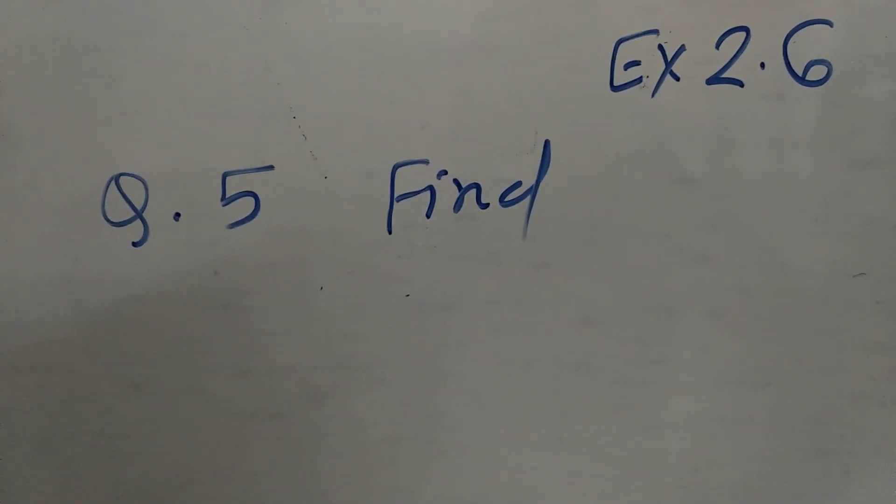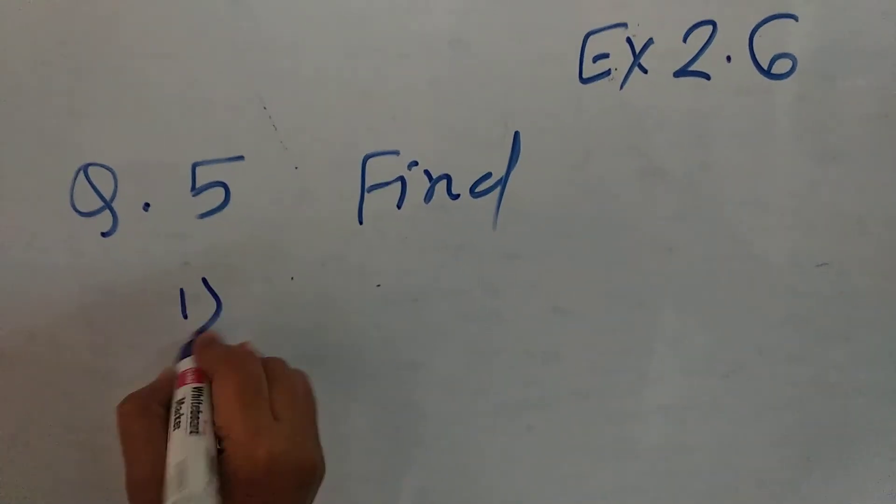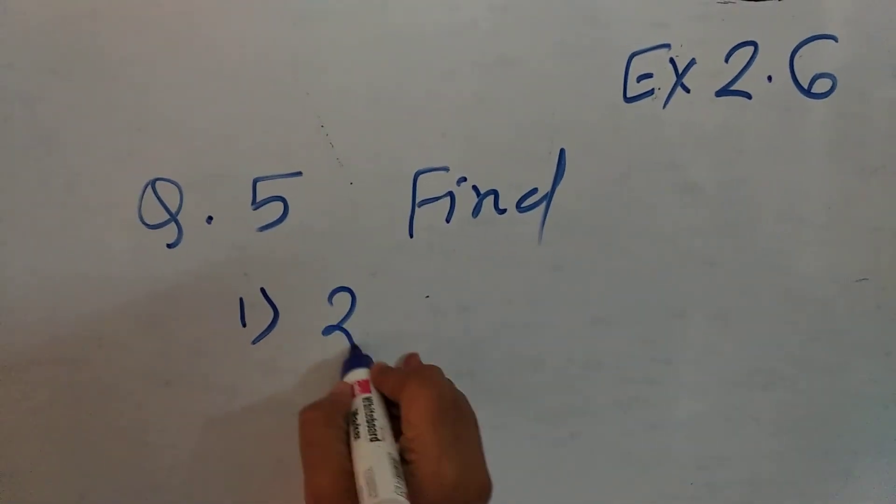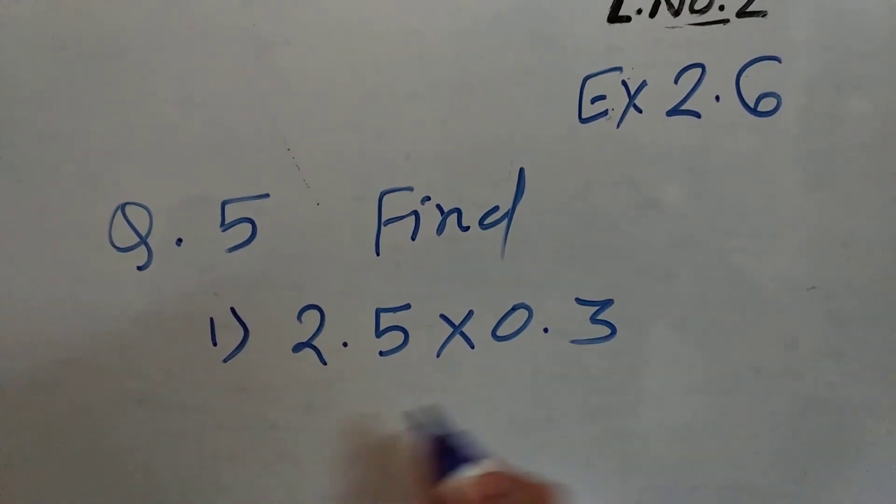Now, question number 5. In that, first one, 2.5 multiplied by 0.3.